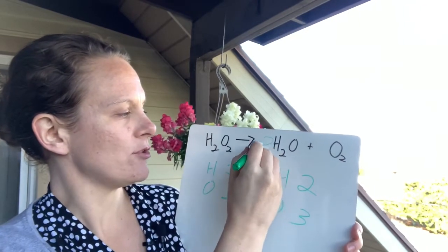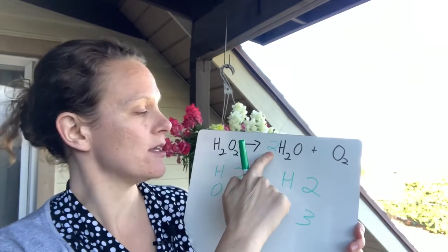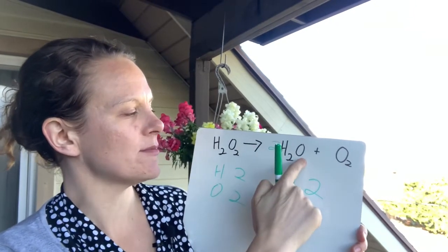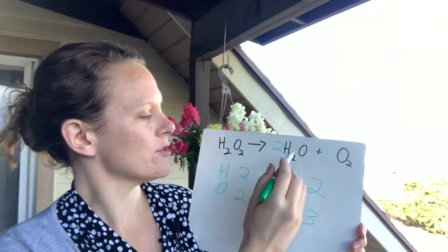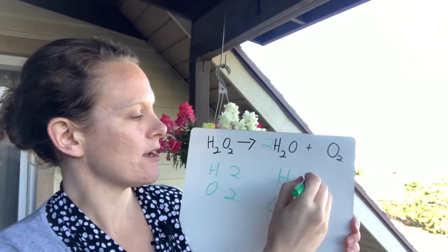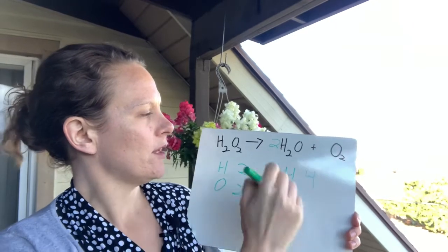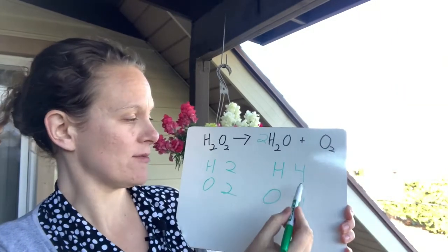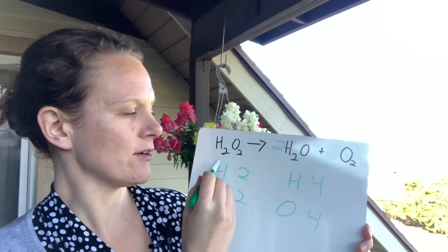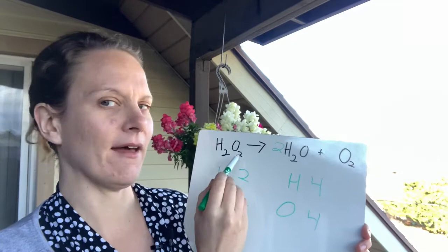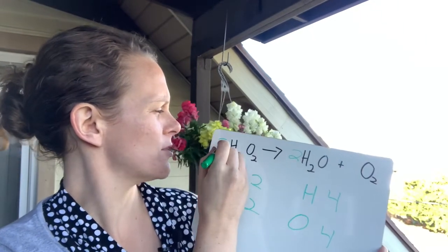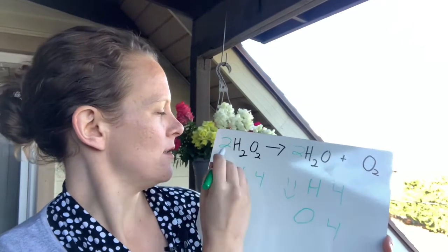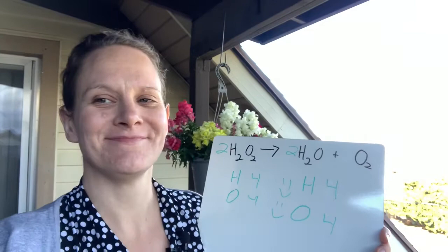Let's try putting a two in front of my H2O. This two is a coefficient. It tells me there are two of everything in this compound. So two times how many H's? Two times two is four. And two times how many oxygens? Two times one is two. Now I have four H's and four oxygens on the product side. This right here is exactly half of this. Let's see if a coefficient will go right there. Two times two is four. That's balanced. Yay! Two times two is four. That's balanced. Yay! And my equation is balanced.